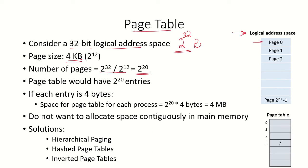So we will have page 0, page 1, page 2, all the way to page 2^20 minus 1, because the numbering starts from 0. Each of these pages is of size 4 kilobytes and the total number of pages is 2 to the power of 20.